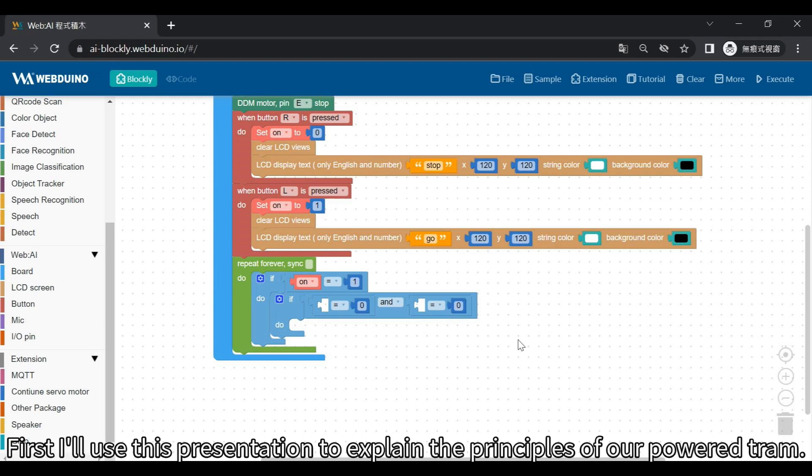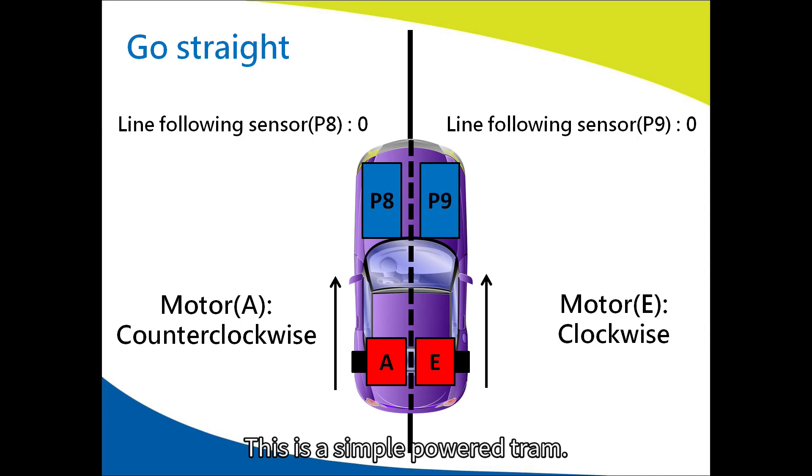First I'll use this presentation to explain the principles of our powered tram. This is a simple powered tram. The left line following sensor is P8. The right line follower sensor is P9. The left motor is motor A. The right motor is motor E. These are their object identifier names.